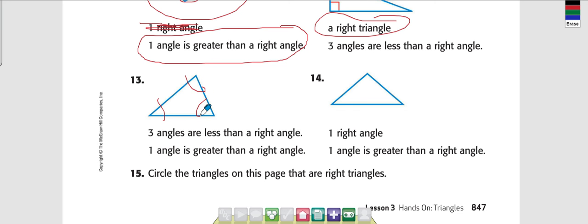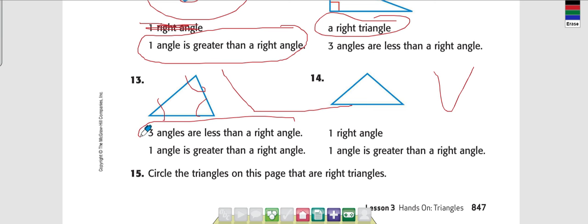Look at 13 — all three angles are less than a right angle. None of those three angles look wide open — they all look like the small V. So this is correct, all three of them are less than a right angle.